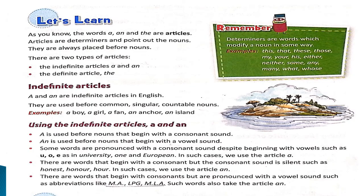In the alphabet A to Z, we all know we have vowels and we have consonants. And what are vowels? Vowels are A, E, I, O, U.